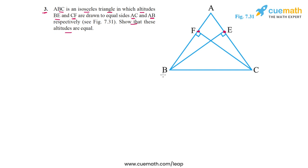In other words, from B and C, the base vertices, altitudes are drawn to the equal sides, so we have to show that these altitudes will also be equal.